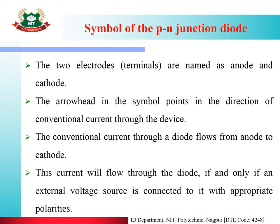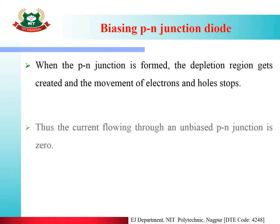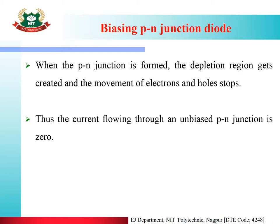The current flow stops when no external voltage is applied. The current flowing through an unbiased PN junction is zero, because the movement of electrons and holes stops. Since electrons are not moving, current cannot flow. Therefore, in an unbiased PN junction, the current is zero.